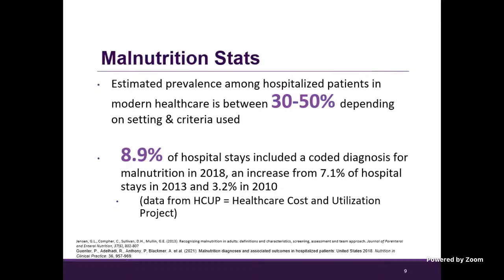An urban hospital is going to have a different patient population than a small hospital in a rural setting, which is why there's some variability in this number. The Healthcare Cost and Utilization Project looks at coded diagnoses in hospitals in the United States and comes out every few years with this data. The latest is from 2018, and it showed that 8.9 percent of hospital stays in the United States included a coded diagnosis for malnutrition — an increase from 2013, which was also increased from 2010. Part of that big jump from 2010 to 2013 can probably be accounted for by the ASPEN AND criteria that came out in 2012, giving us standardized criteria to follow. There's a big gap between what's estimated for prevalence versus what is actually being coded.